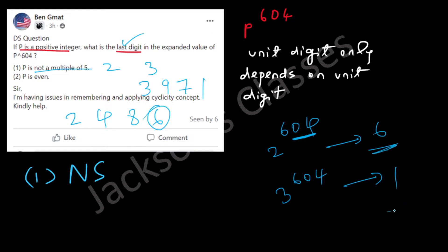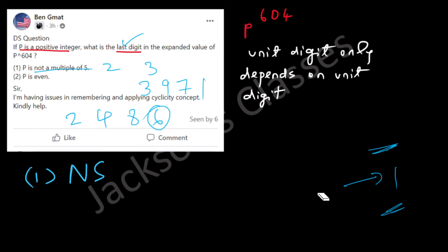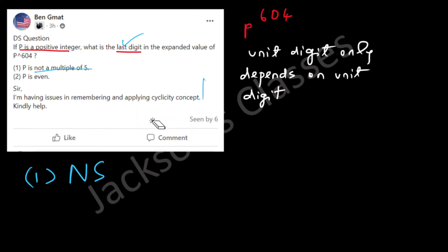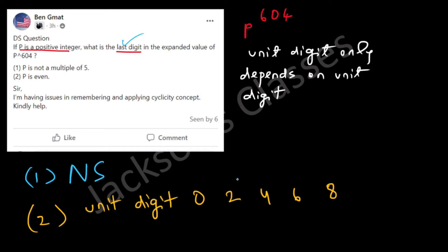So Statement 1 is not sufficient, because we get different unit digits. Now Statement 2 says p is even, so the possibilities for the unit digit of p are 0, 2, 4, 6, and 8. Note that 604 is a multiple of 4 — you can verify this by dividing: 151 × 4 = 604.